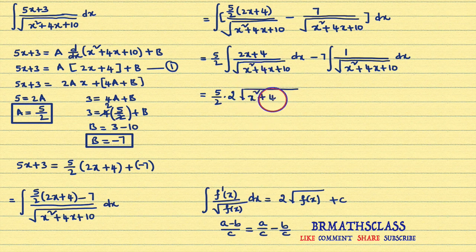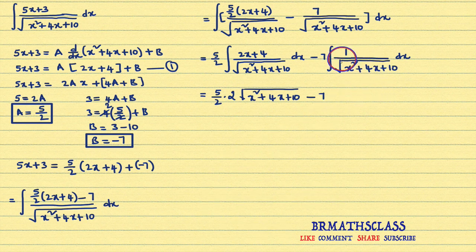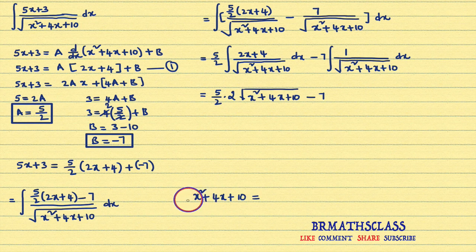Now for the second integral: 1 divided by square root of x square plus 4x plus 10. This is of the form 1 divided by square root of ax square plus bx plus c. We consider the expression x square plus 4x plus 10. First, we make sure the x square coefficient is 1. Here, x square coefficient is 1, so nothing to worry. My main intention is to write this expression in one of the forms: a square minus x square, a square plus x square, or x square minus a square.